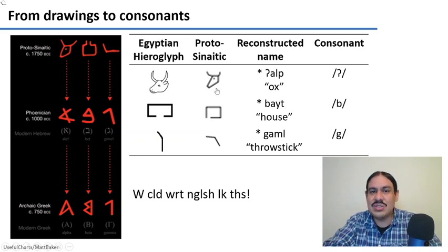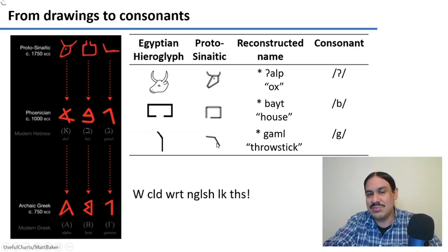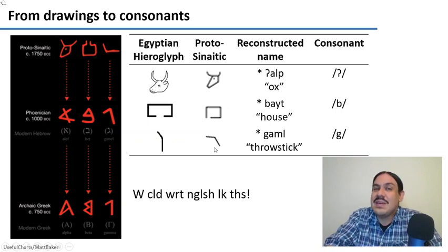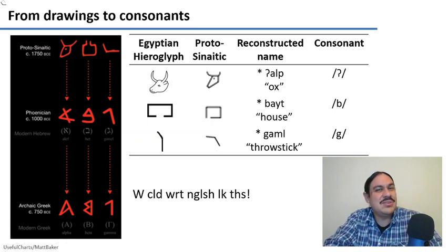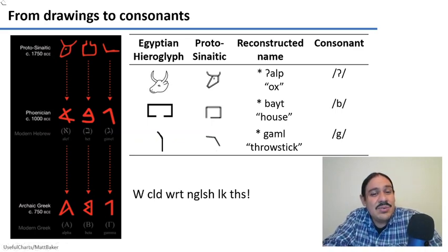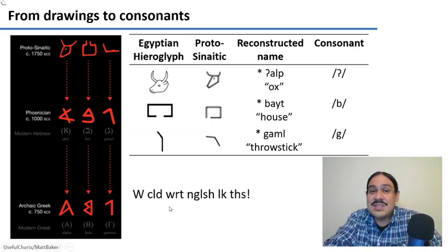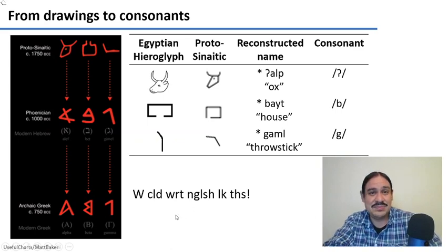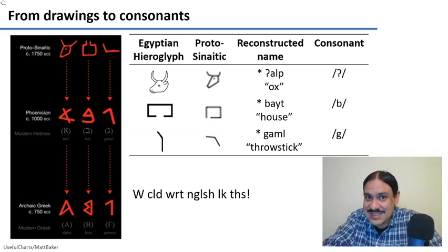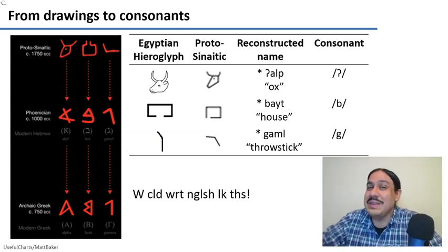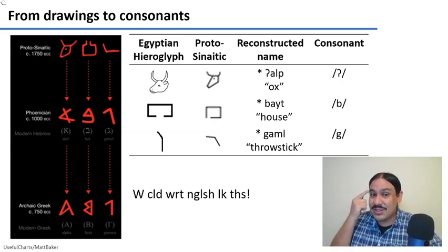Proto-Sinaitic used only the first consonant of each word to write language. You might ask: don't you need vowels to read a language? The truth is you don't. We could write English without vowels — you just need to know enough English to fill in the vowels mentally.